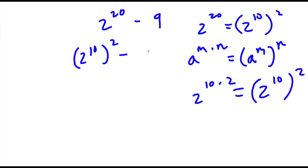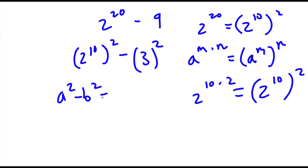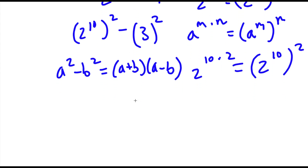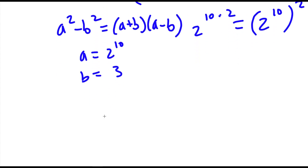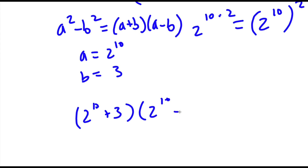So I have 2 to the power of 10, to the power of 2, minus 9. This is the same thing as 3 squared. Now if I have something in the form a squared minus b squared, this is equal to a plus b times a minus b. So in this case a is equal to 2 to the power of 10 and b is equal to 3. So now I have 2 to the power of 10 plus 3, times 2 to the power of 10 minus 3.